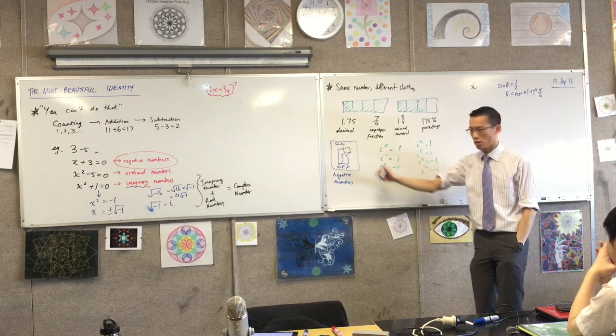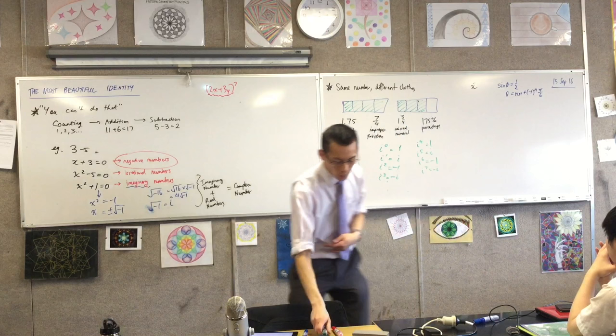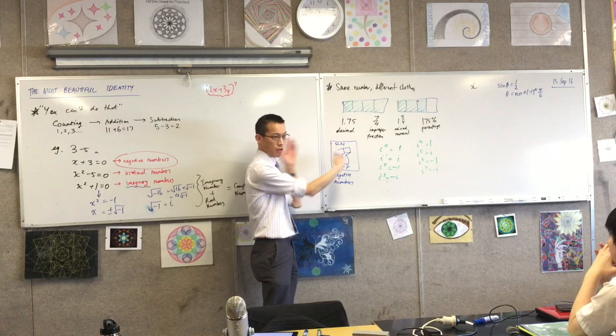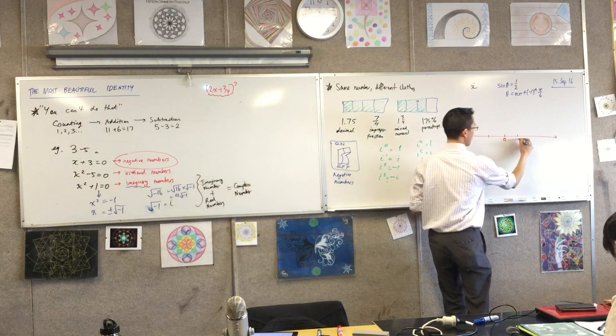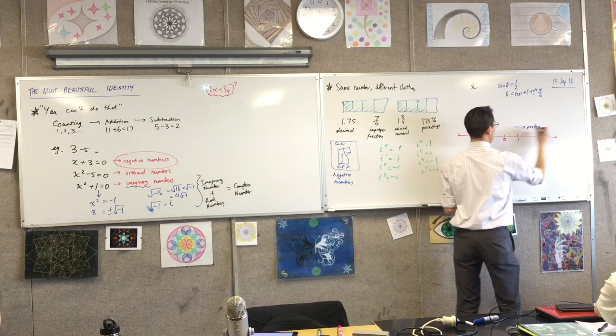Now, to help you, I want you to remember that in addition to having this idea, we diagrammatically represent, you know, negative numbers, integers, on a number line. On a number line, right? So we say, okay, one, negative one, here's the positive direction, and here's the negative direction.